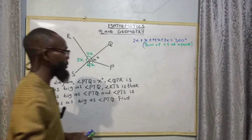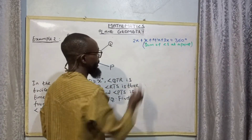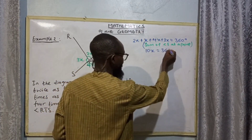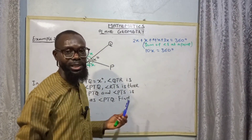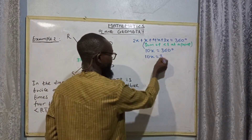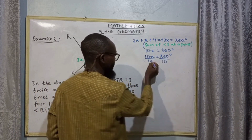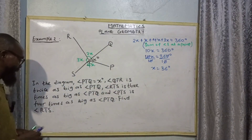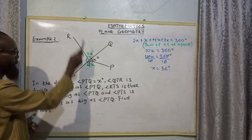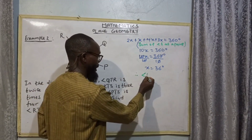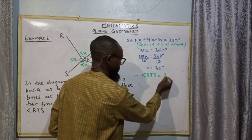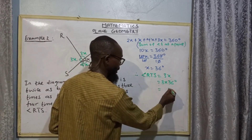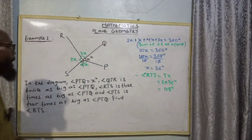Now let us sum it up: 2x + x = 3x; 3x + 4x = 7x; plus 3x = 10x. So 10x = 360 degrees. To find the value of x, divide both sides by 10. x equals 36 degrees. We are asked to find the value of angle RTS. Therefore angle RTS equals 3x, that is 3 multiplied by 36 = 108 degrees. So that's the value of angle RTS.